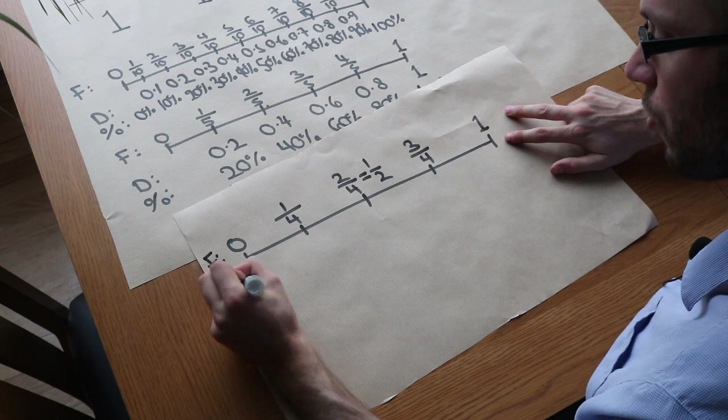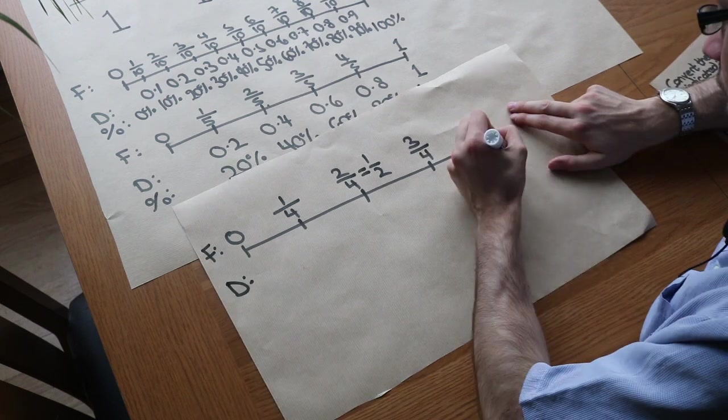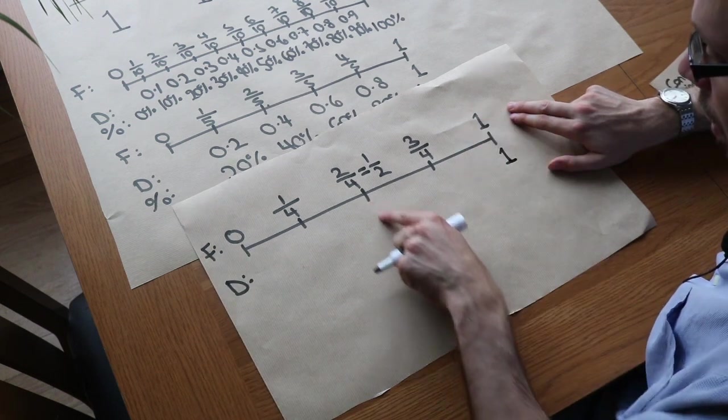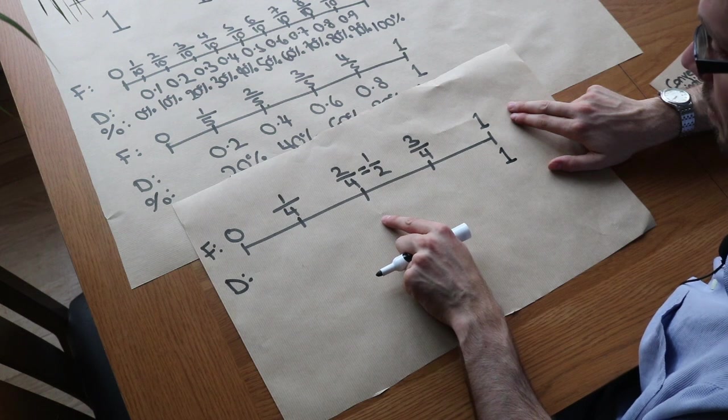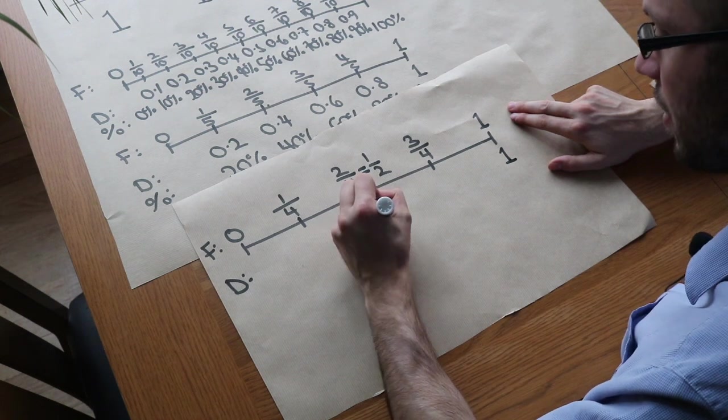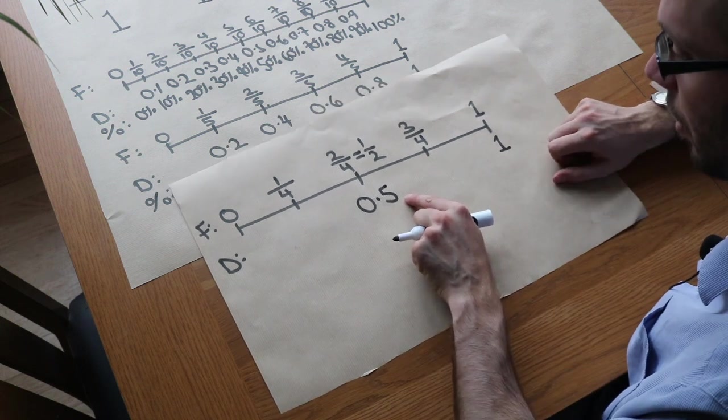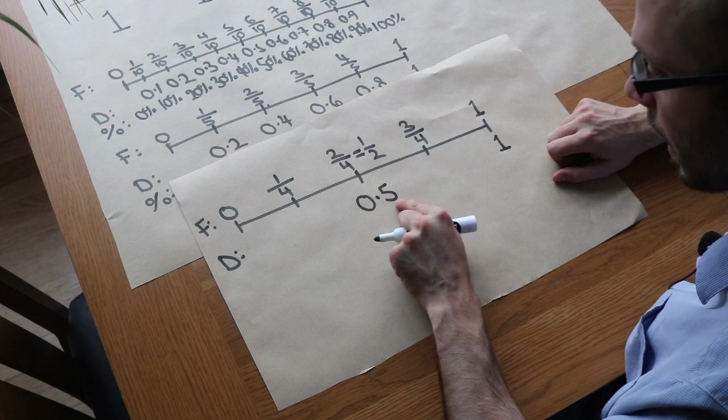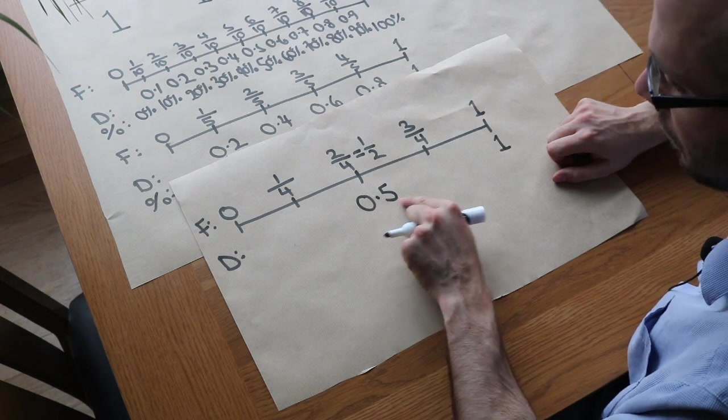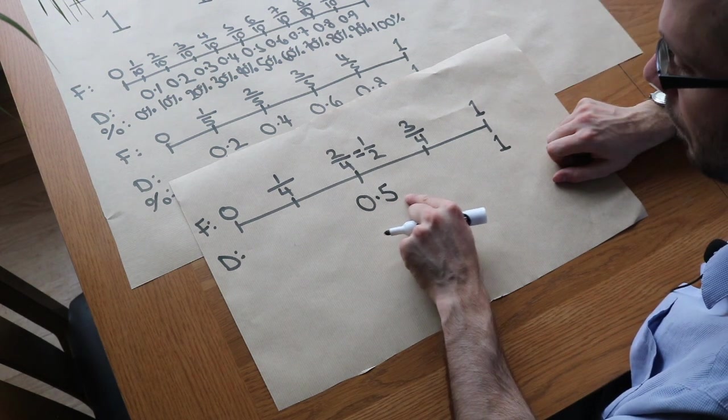So that means, what about the decimal form? This here is 10 tenths. So if you want the halfway mark, what's half of 10 tenths? Well, it would be 5 tenths, so that would be 0.5. Now, if you imagine that there was a cheeky little 0 there, so you had 0.50. Now, think of that 5 0 there, like the 50. What would be half of 50?